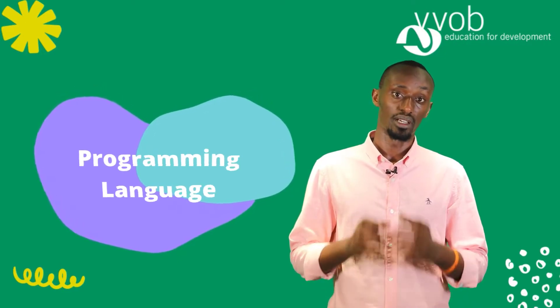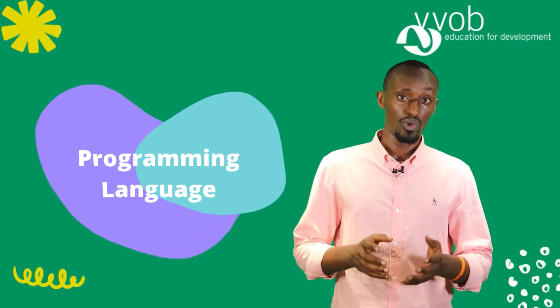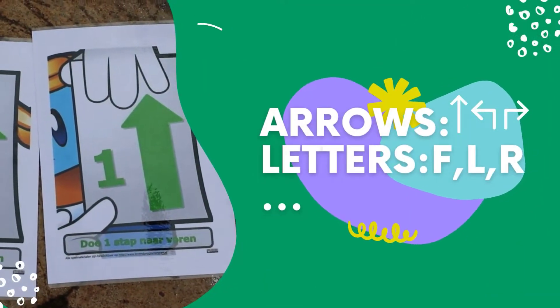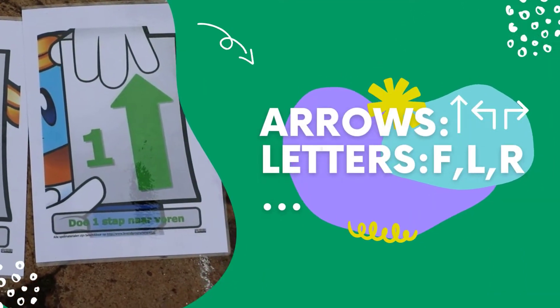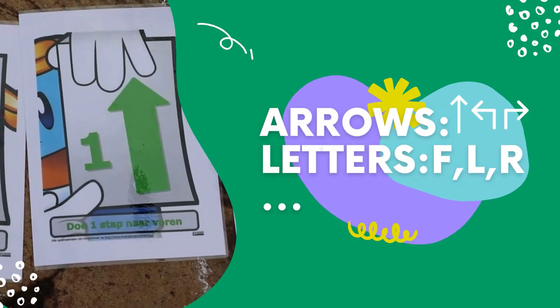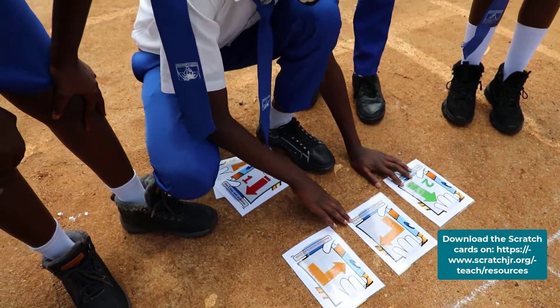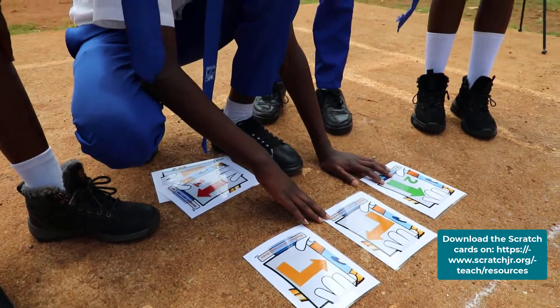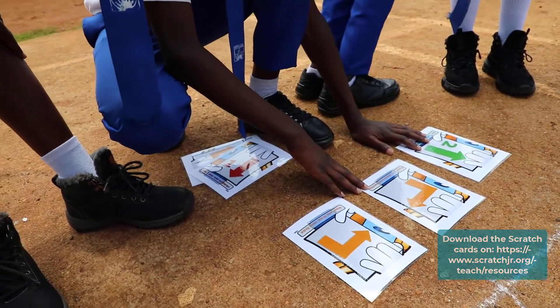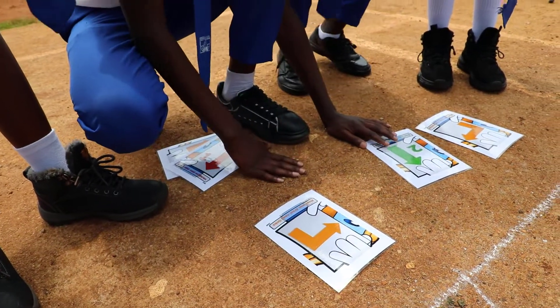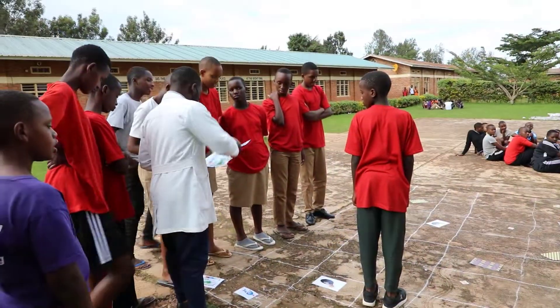This means they decide on the programming language. Examples of programming language are arrows pointing on cards — forward, turn left, right — or letters such as F for forward, L for turning left, and so many others. In our example, we will use arrows pointed on the cards. If you do not have cards, you can write down the code with chalk on the ground or pen on paper.